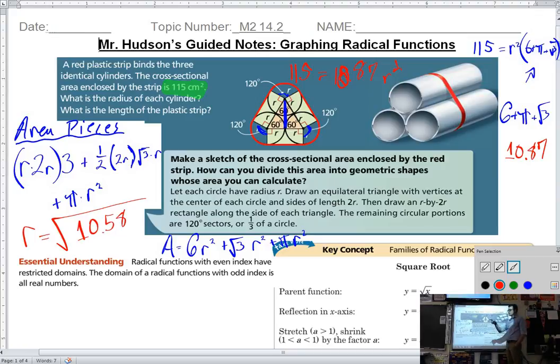So what we have now is 115 equals 10.87r squared. So we can divide by 10.87, and then we'll end up with some value for r, being that r is equal to the square root of approximately 10.58, which is approximately 3.25. Good work.